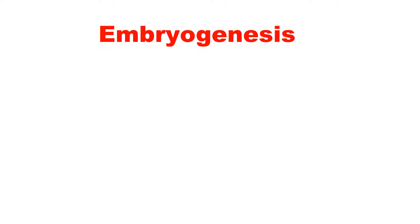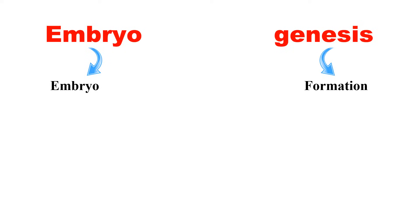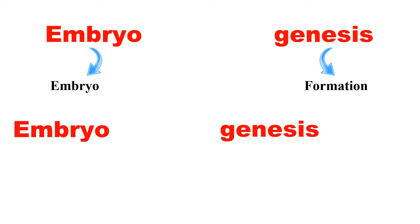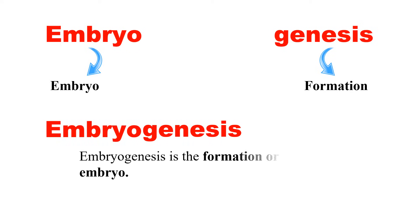First of all, we should know what is embryogenesis. The word embryogenesis is formed of two words: embryo plus genesis. Embryo means embryo and genesis means formation. So embryogenesis means the formation of embryo.